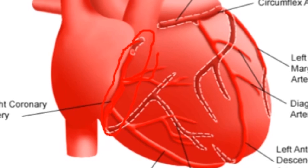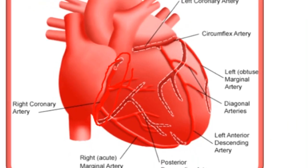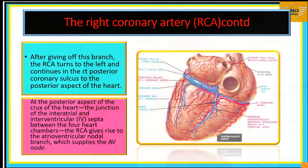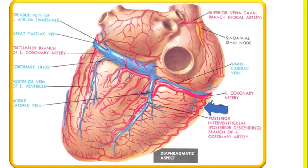The right coronary artery will continue in the coronary sulcus and give off another branch called the right marginal branch. This right marginal branch will supply the right border of the heart and will run towards the apex of the heart. You can see it running on the right border of the heart towards the apex, though it usually does not get to the apex of the heart. This is the right marginal artery as we've noted.